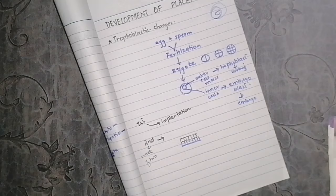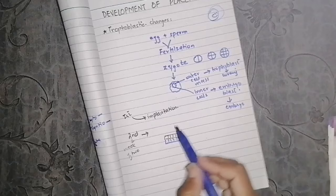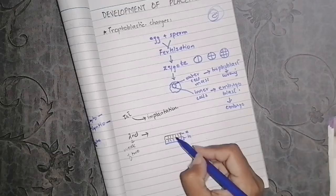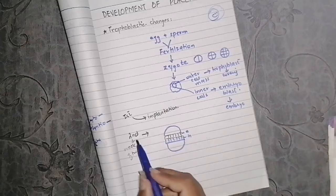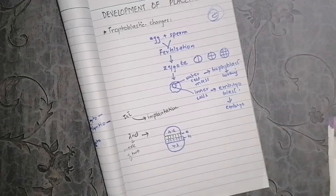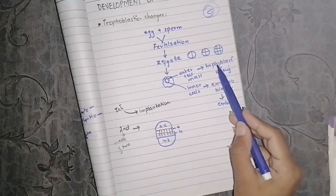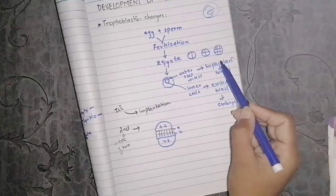In the second week of development, all events happen in twos. The inner cell mass forms epiblast and hypoblast. There are cavities — the most notable is the amniotic cavity. The trophoblast also undergoes changes and we have the embryoblast as part of this development.